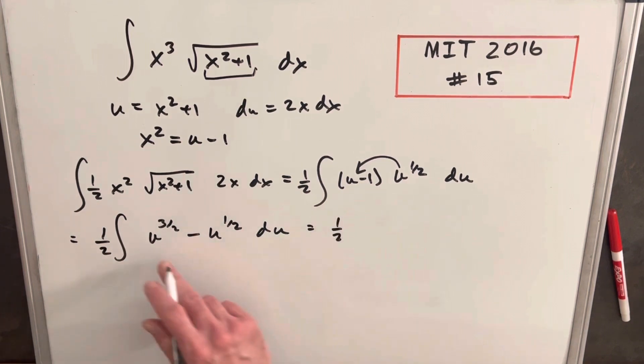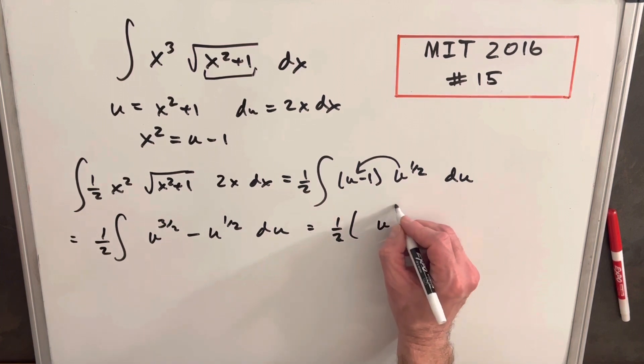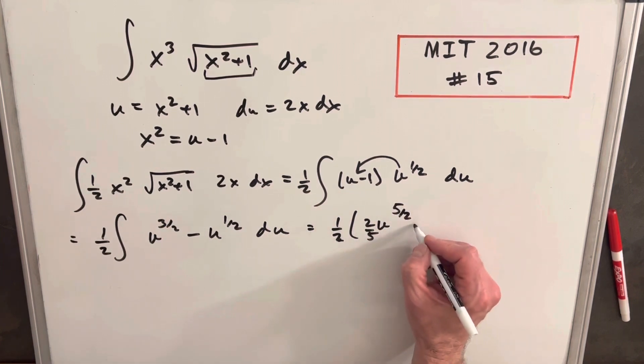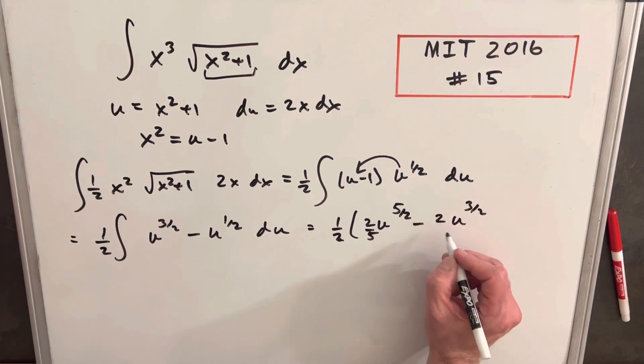We have half, then here. Okay, let's do parentheses. So power rule here, u to the 5 halves times 2 fifths minus u to the 3 halves, 2 thirds.